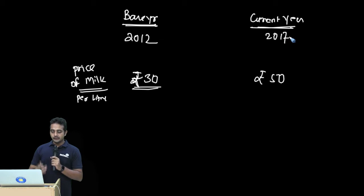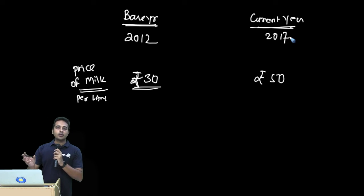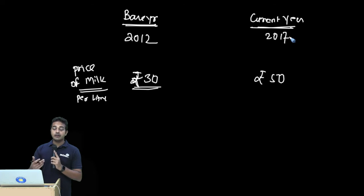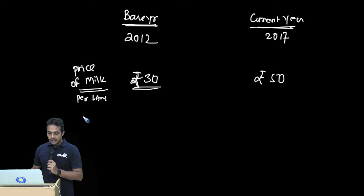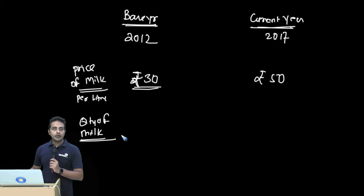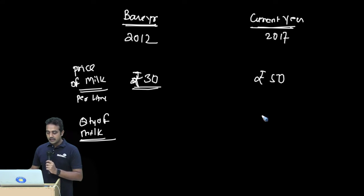The price of milk is 30 rupees per litre in 2012 and it is 50 rupees per litre in 2017. The increase from 30 to 50 is because of the cumulative inflation — not one year, but from 2012 to 2013, 2013 to 2014, and so on. Now let us say the quantity of milk produced and sold is 1000 litres.